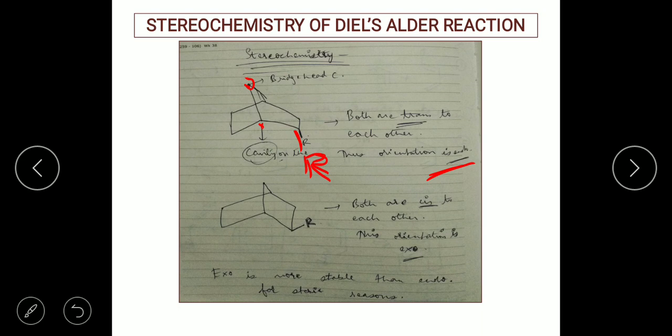Coming to the exo orientation: we have the cavity and the bridgehead carbon. If the substituent R is facing away from the cavity, we call that orientation exo. Another way of explaining exo: if the R group is facing towards the bridgehead carbon, or they are cis to each other — the bridgehead carbon and the R group are towards each other — then we call that the exo orientation.